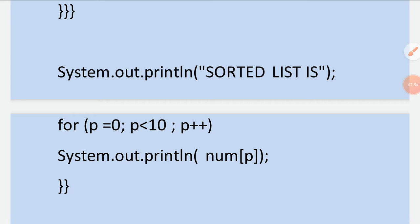This is the bubble sort technique. It has come in the ICSE exam many times — to arrange 10 elements or n elements. N elements means we don't know whether we have to enter 10 or 6 elements. I will also show you how to handle n elements — only a little modification is needed, and I will tell you where.